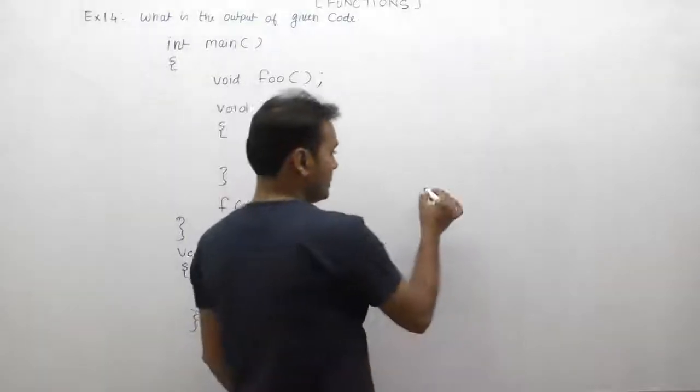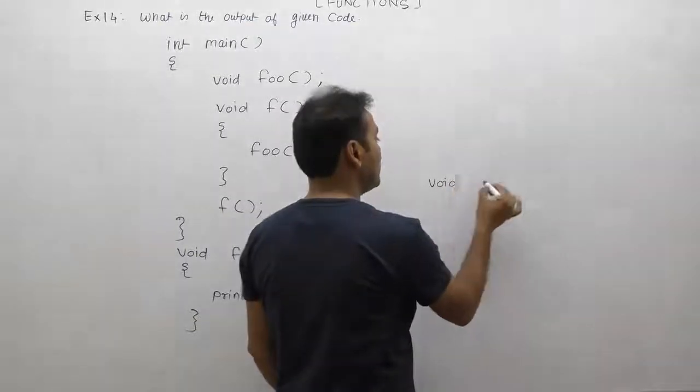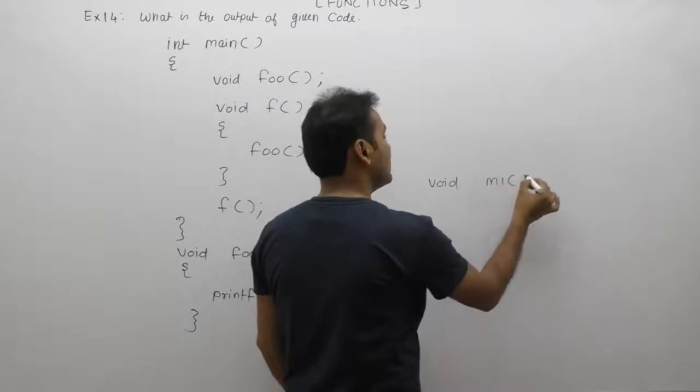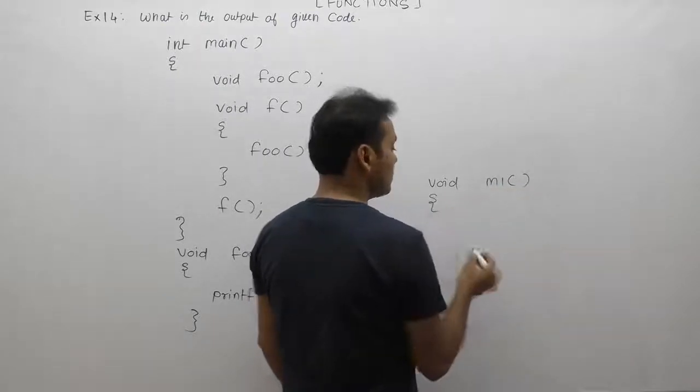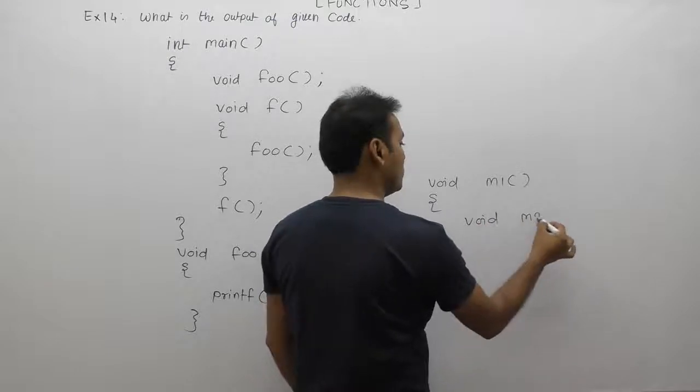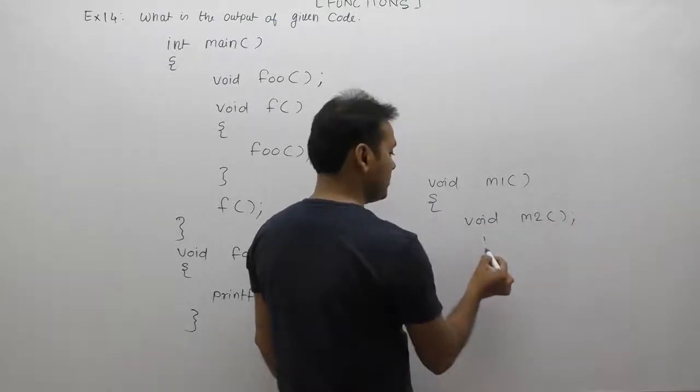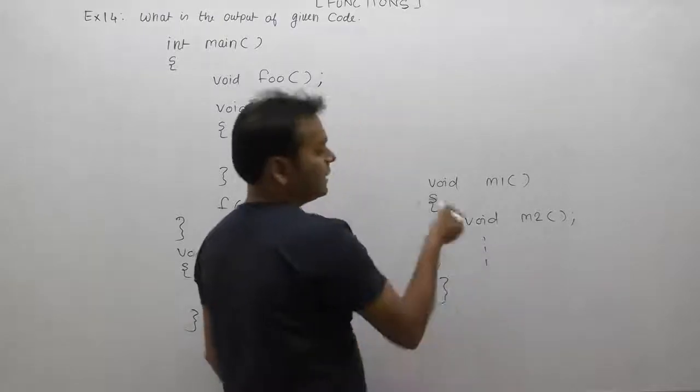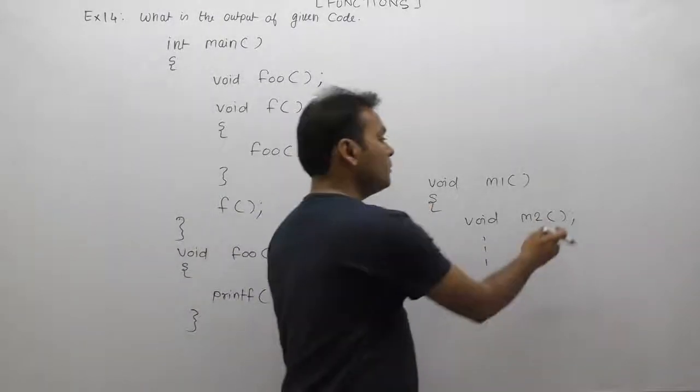The C function body can contain declarations of other functions - that is possible. Like void m2, here we are providing declaration of m2, and the remaining code is valid. But we cannot provide definition of another function - it is invalid.